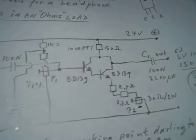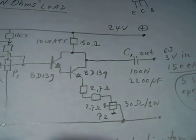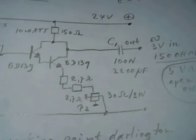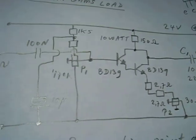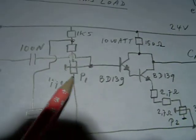This is the circuit. It consists of two BD139 transistors. In fact, it's a Darlington, and the working point from the Darlington is set with P1, here.